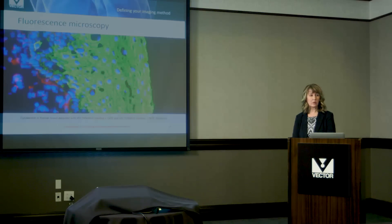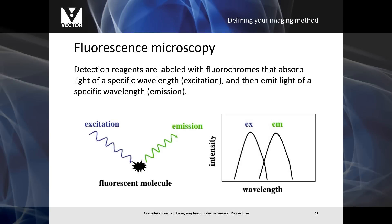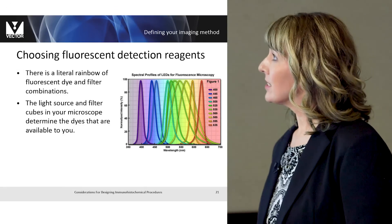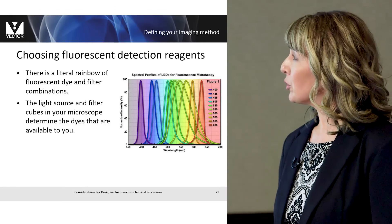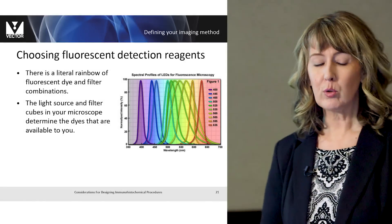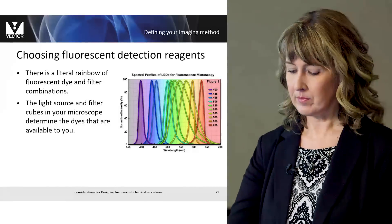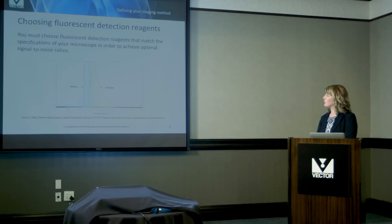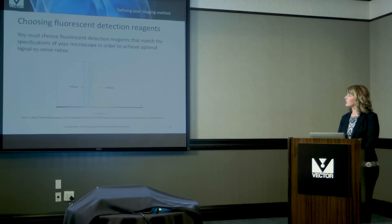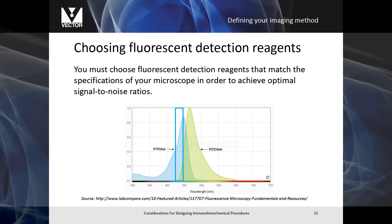A second type of visualization is fluorescence microscopy. Detection reagents are labeled with fluorochromes that absorb light at a specific wavelength, called the excitation wavelength, and they emit light at a longer wavelength, called the emission wavelength. You'll want to choose your fluorescent detection reagents to match the light source and the filter cubes of your microscope. There's a literal rainbow of fluorescent dye choices that you can choose when designing your protocol. When choosing your fluorescent detection reagent, you should choose reagents that match the specifications of your microscope in order to achieve optimal signal-to-noise ratio.